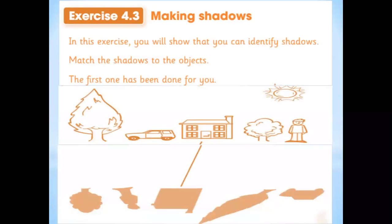I hope you now understand how and when shadows are formed. In the presence of a light source, shadows are formed when light is blocked by an opaque object. An opaque object is one that blocks the light.